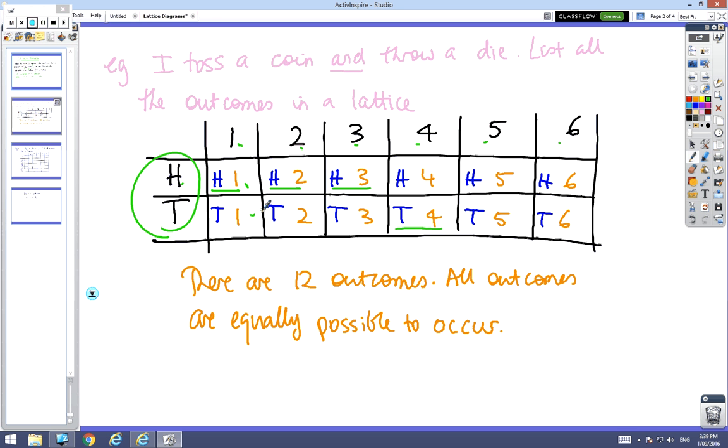When you count the boxes up, there are 12 different outcomes, and all the outcomes are equally likely. A way to make sure you haven't lost any: tossing a coin has two different outcomes, throwing a die has six outcomes, and two times six equals twelve. That's how you work out how many different boxes you should have. Copy that and come across when you're ready.